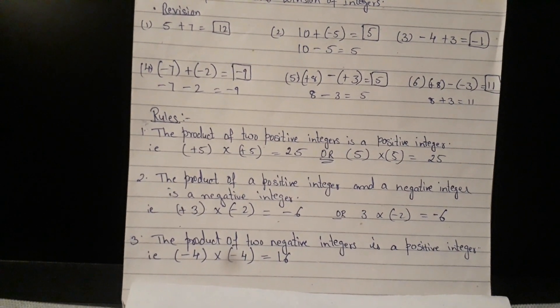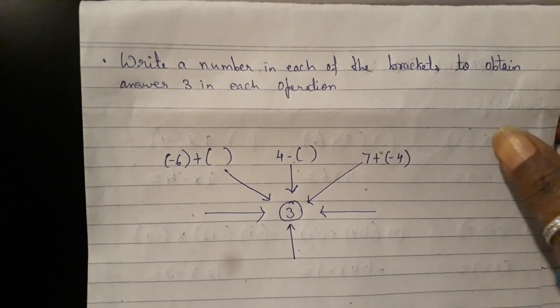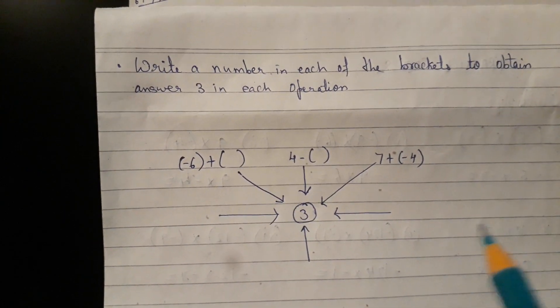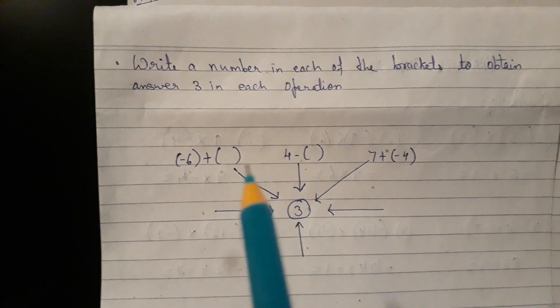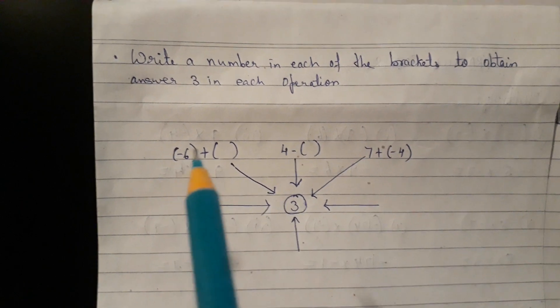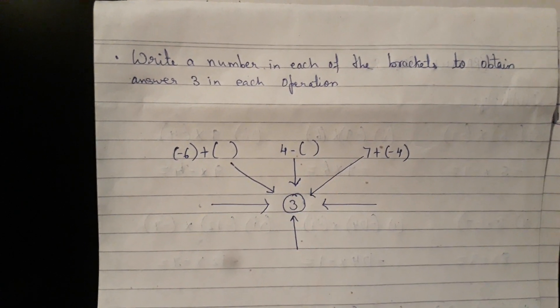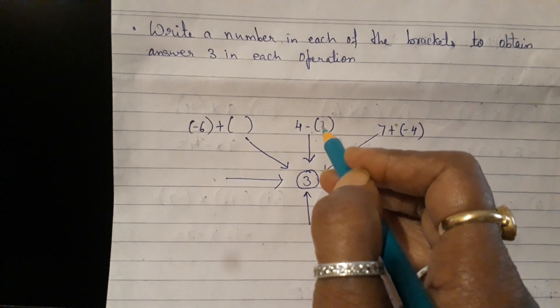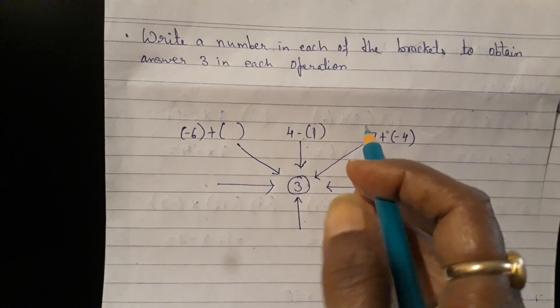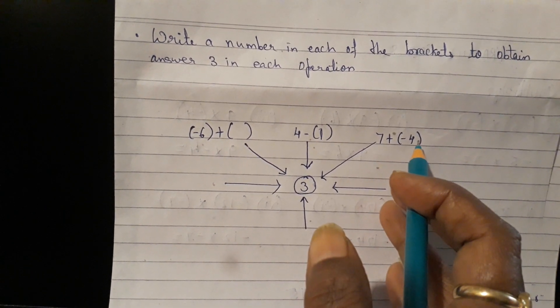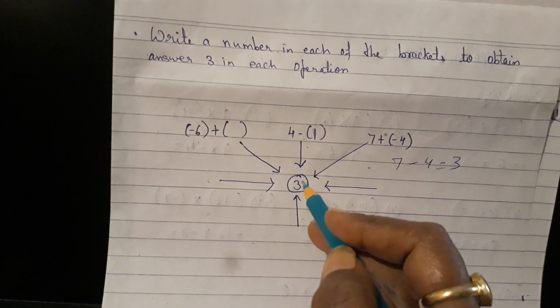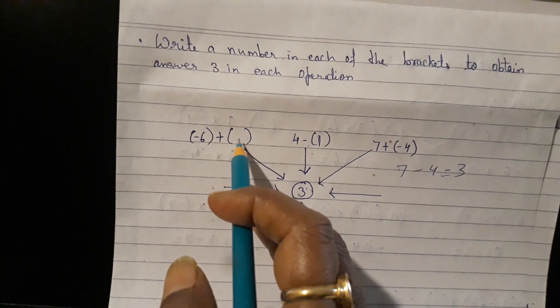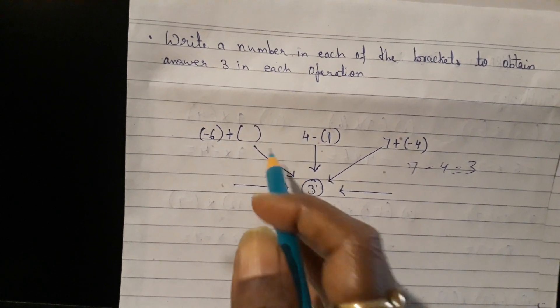So also, we solve the second one. Write a number in each of the brackets to obtain answer 3 in each operation. It's like a game. 3 is in the center. So wherever there is a blank bracket, you need to write down the number. So when you write a number there, your answer should give 3. Let's start with first one. 4 minus what will give me 3? That's right. 4 minus 1 will give me 3. Now 7 plus minus 4. It's already given. So 7 plus minus 4 plus into minus minus. So 7 minus 4 will give me 3. So that's the answer here. And the next one, minus 6 plus. What should I put in the bracket here? So I will get 3. Oh yes, you are right. It is 9.